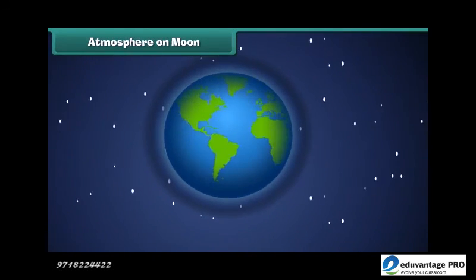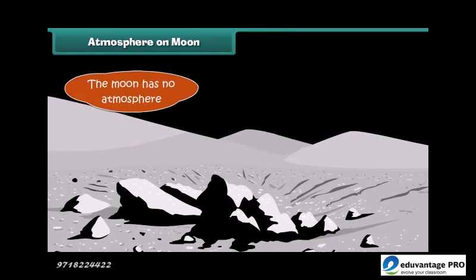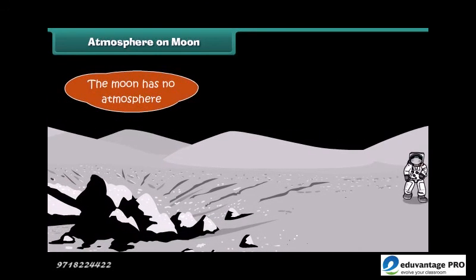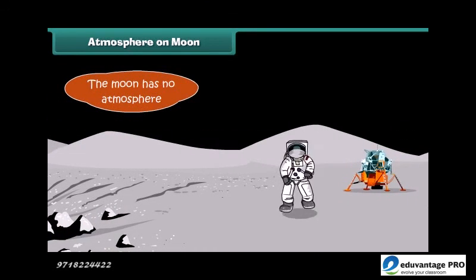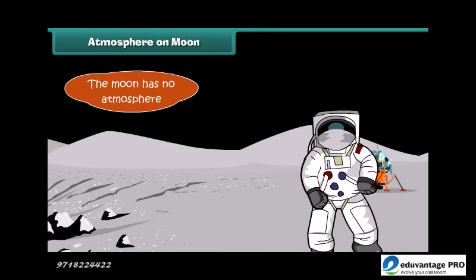Unlike Earth, the moon has no atmosphere, due to which the sky always appears dark, even on the bright side. Also, there can be no sound transmission on the moon since sound waves travel through air and the moon has no air.